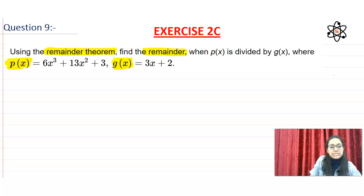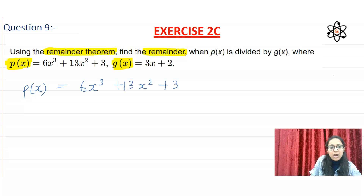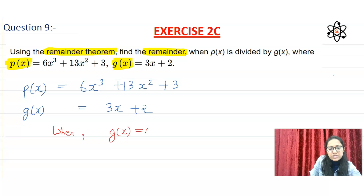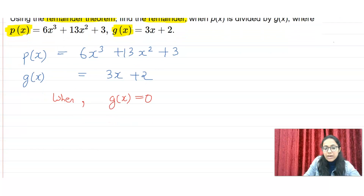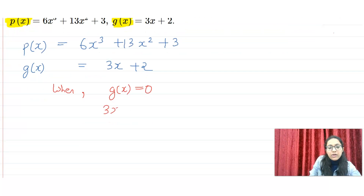So look at this process. First of all, you have to write what you have given. p(x) is equal to 6x³ plus 13x² plus 3. And g(x) is equal to 3x plus 2. Now, when we apply the remainder theorem, we set g(x) equal to zero, because we have to perform division here.